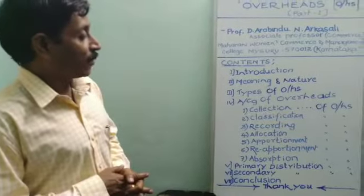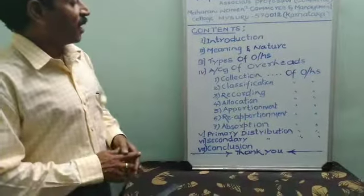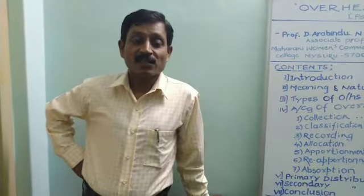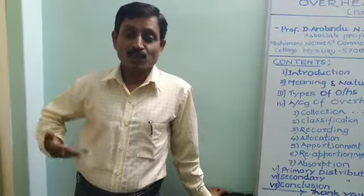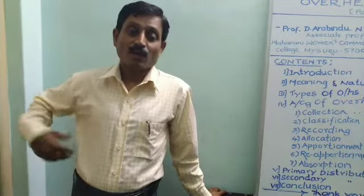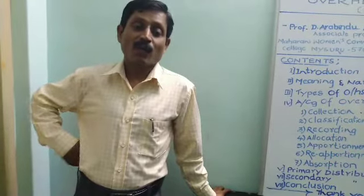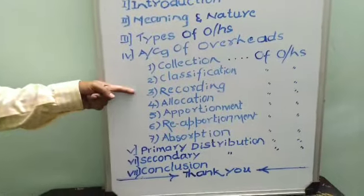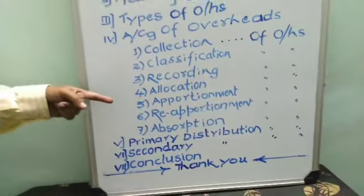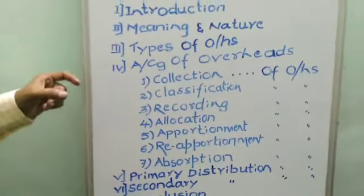Accounting of overheads certainly has four stages: the collection stage, the distribution stage, the redistribution or reapportionment stage, and the last stage — the absorption stage. However, all these stages are grouped under seven categories: collection, classification, recording, allocation, apportionment, reapportionment, and lastly absorption of overheads. These seven steps constitute the accounting of overheads.